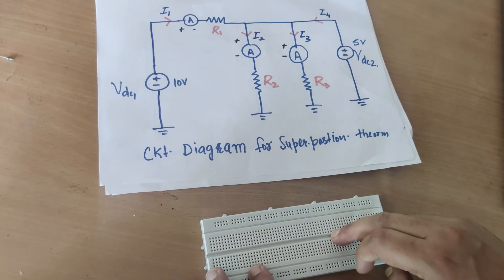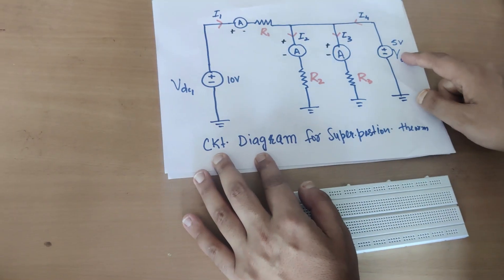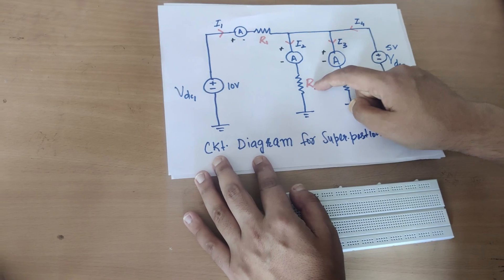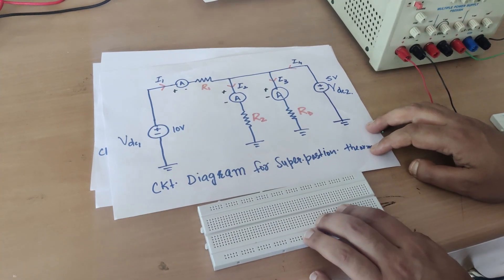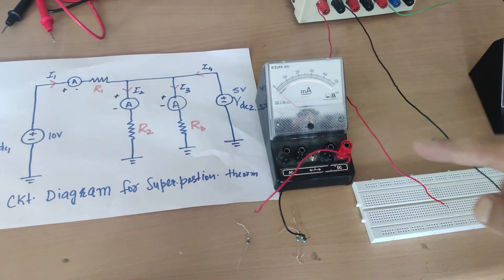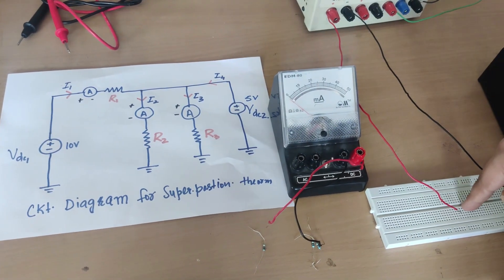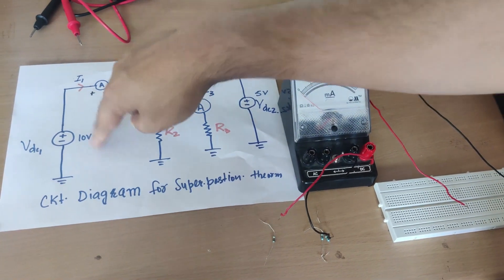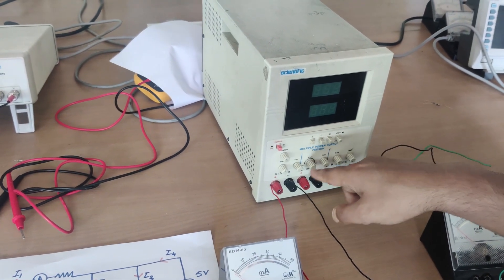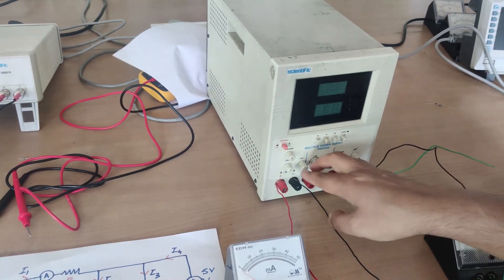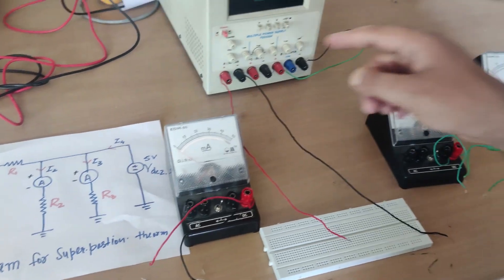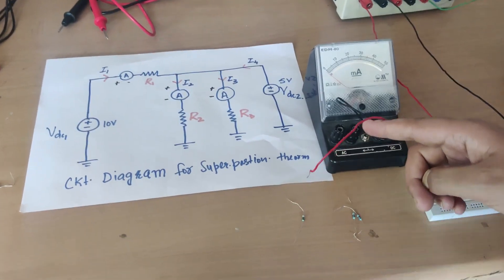Now let us practically design this circuit on the breadboard. We have two independent voltage sources — 10 volts and 5 volts, both DC — and three resistors R1, R2, and R3, plus three ammeters connected in series. We require two DC sources; the DC supply unit has multiple sources which I will set on channels A and B, variable from 0 to 30 volts. I also have three ammeters and three resistors.